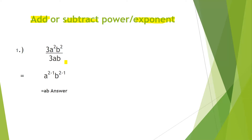First you have to simplify the numbers: 3 divided by 3 equals 1. Then come to the variables. The top part is called the numerator and the bottom part is the denominator. In the numerator we have a² and b², and in the denominator we have a and b.